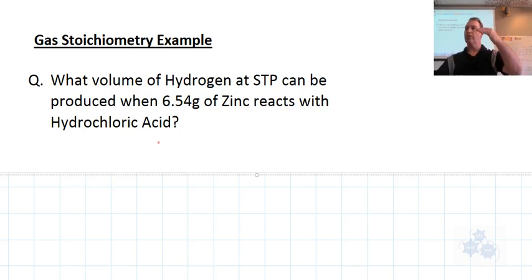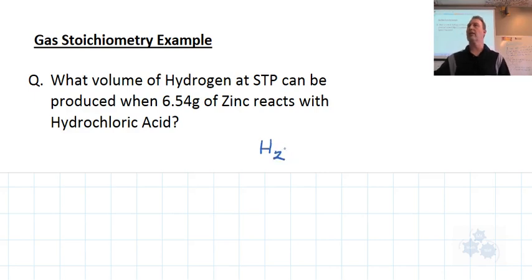Again, the steps in doing stoichiometry problems are you first have to write a balanced chemical equation. That's the first thing we're going to do here. Hydrogen is going to be produced, so I'm going to put hydrogen over here. Hydrogen by itself is always H2 because it's diatomic. You've got to remember that, part of the diatomic seven.